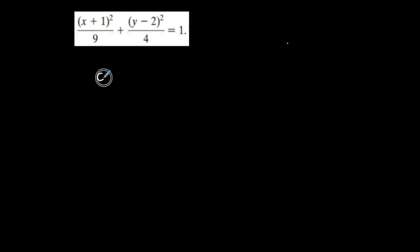So the center is at, what am I subtracting from x? I'm subtracting negative 1 from x. What am I subtracting from y? I'm subtracting 2 from y. So the x-coordinate of the center is the opposite of this, and the y-coordinate of the center is the opposite of this. When you go back and forth between this form and the center, you're always taking the opposite of these signs.